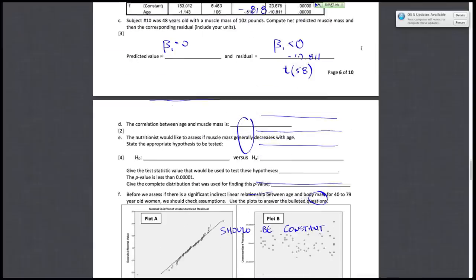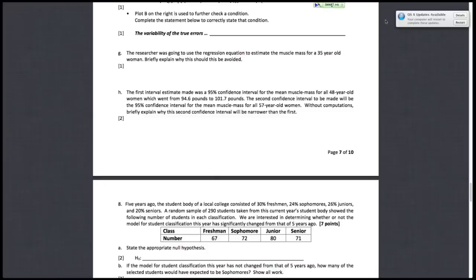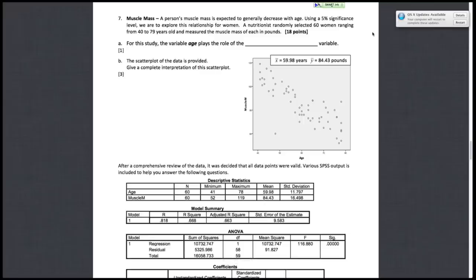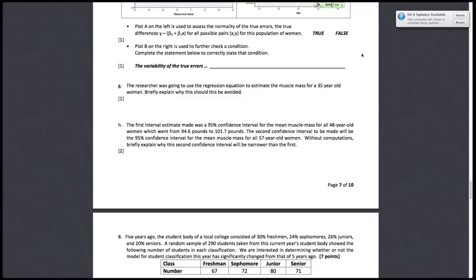Letter G says the researcher was going to use the regression equation to estimate the muscle mass for 35-year-old women. Briefly explain why this should be avoided. And we can see that when we go to our graph, our ages, and our question told us, right, that we were taking people from 40 to 79 years old. 35 is not within our sample. So our equation was made for 40 to 79 year-olds. So to use it to predict for 35-year-olds would be inappropriate. And we call that extrapolation. So the answer is why this should be avoided is because it would be extrapolation.